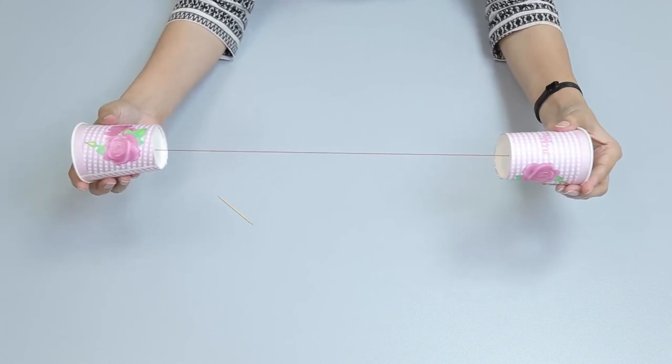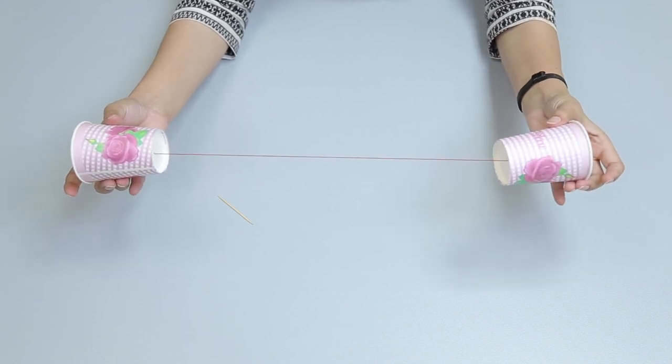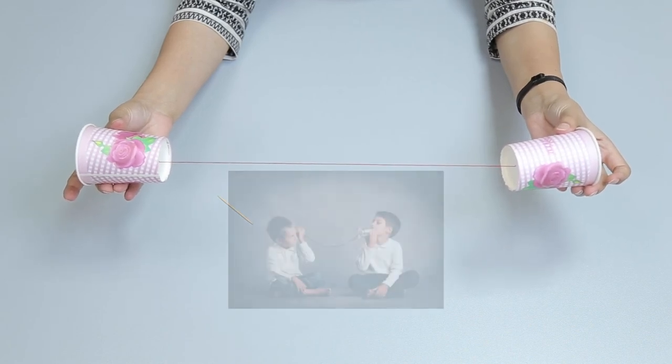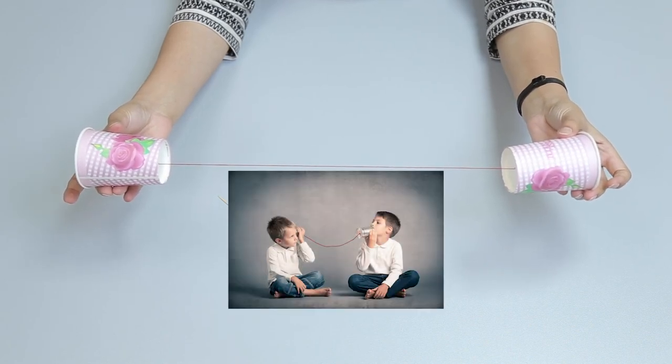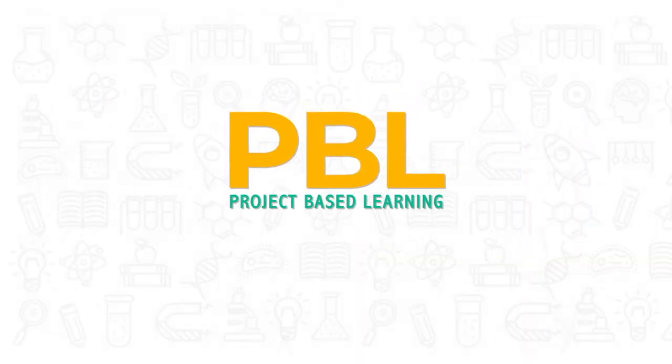Move into position with the help of your friend, holding the cups at a distance that makes the string tight. Now try to hear each other. PBL project-based learning: play, learn and have fun.